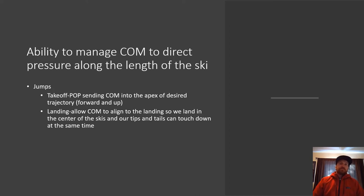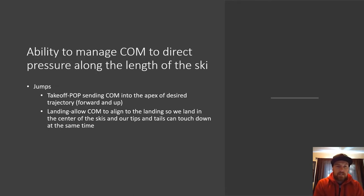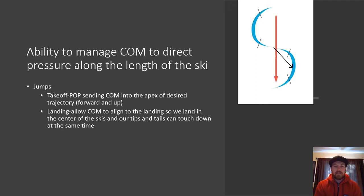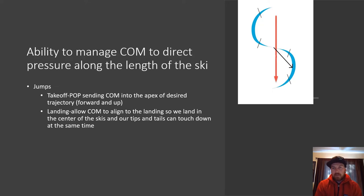First, let's jump into center of mass — the ability to direct pressure along the length of the ski. We talk about this a lot in traditional alpine skiing: moving forward, bending the ski from the tip at the start of the turn, then as we move through the turn shifting to bending the ski from the center so the tail engages and gives us that nice round shape. You've probably all drawn this picture in the snow before, talking about moving into the apex of that turn.